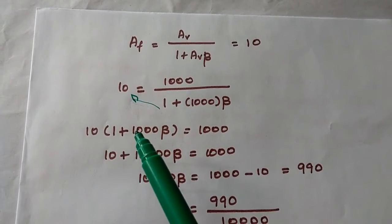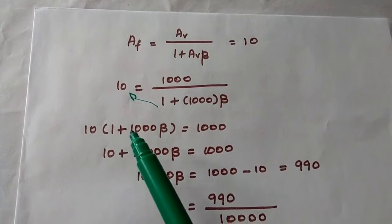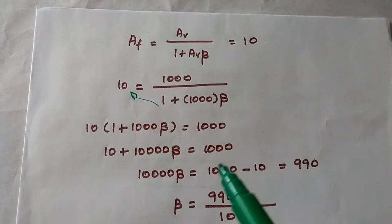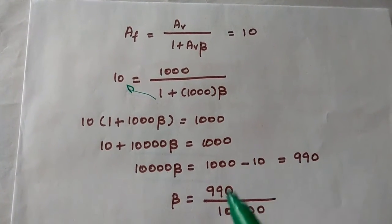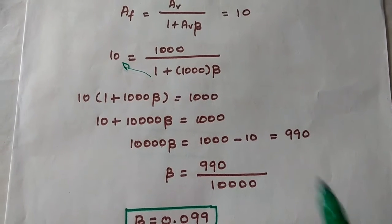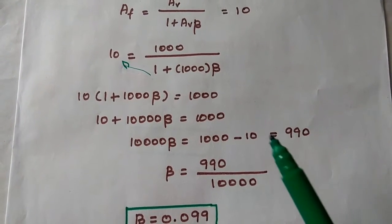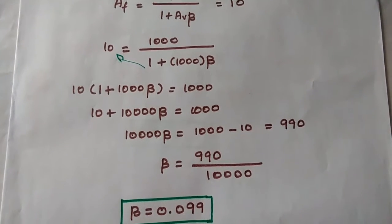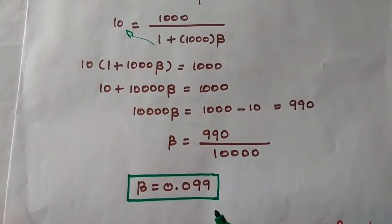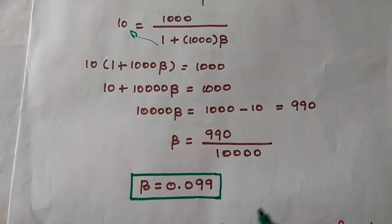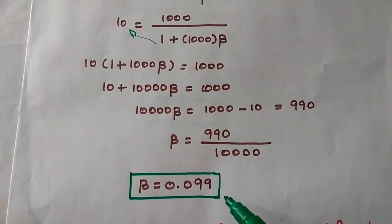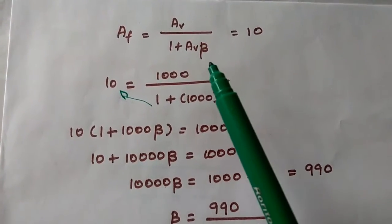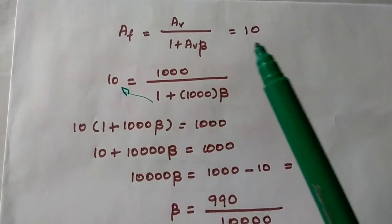Expanding: 10 + 10,000·β = 1000. Moving 10 to the other side gives 10,000·β = 990, so β = 990 / 10,000 = 0.099. We can find any value in this formula if the other two values are known.